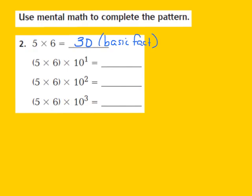In the next step, they give me 5 times 6, and this time it's times the first power of 10. I'm going to write down the product of 5 times 6, which was 30. My exponent here is a 1, so I'm going to add one 0 to my basic fact, and I now have 300.